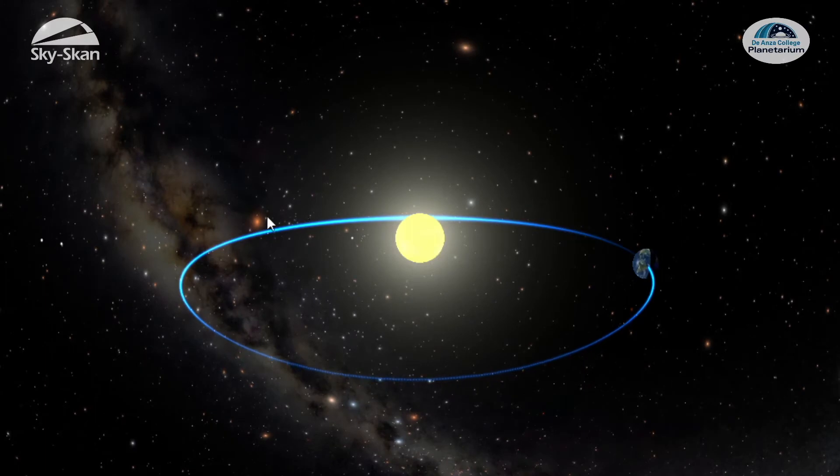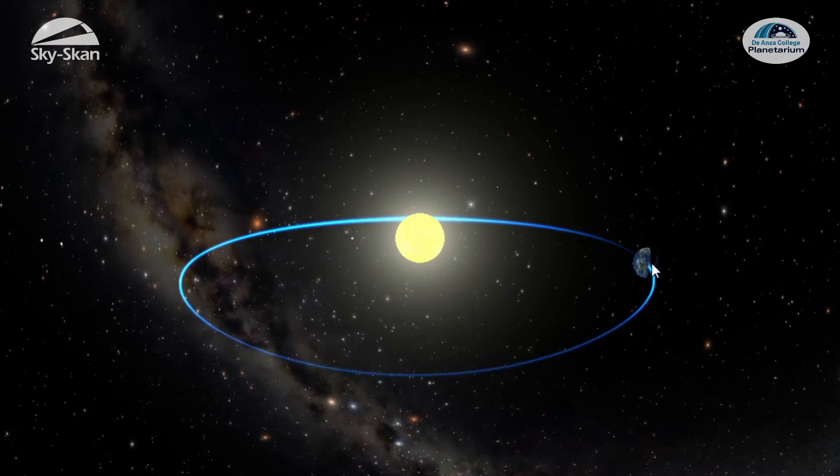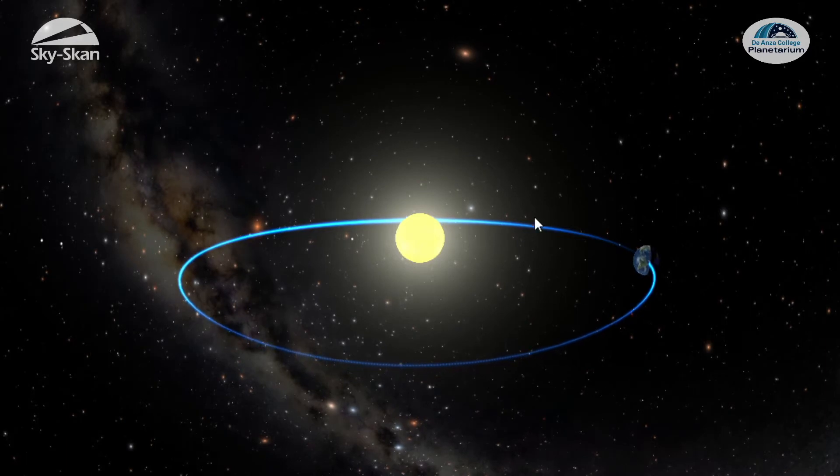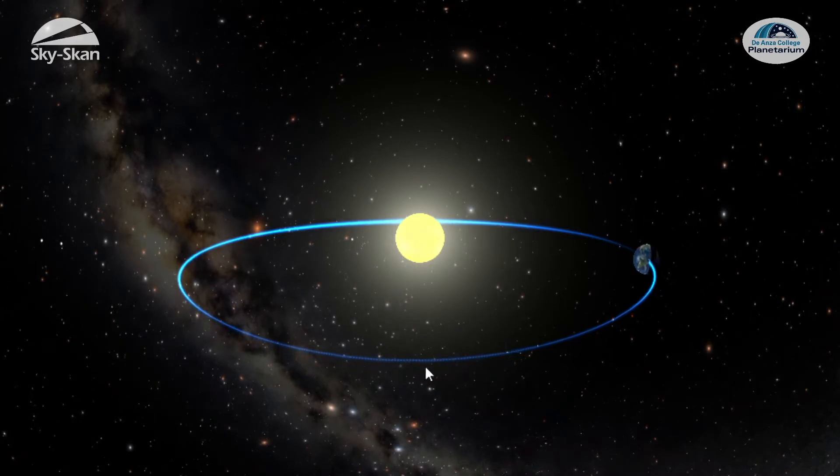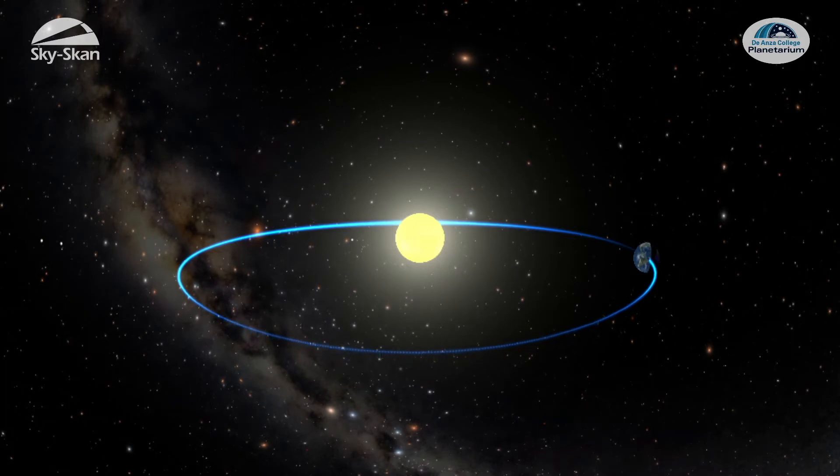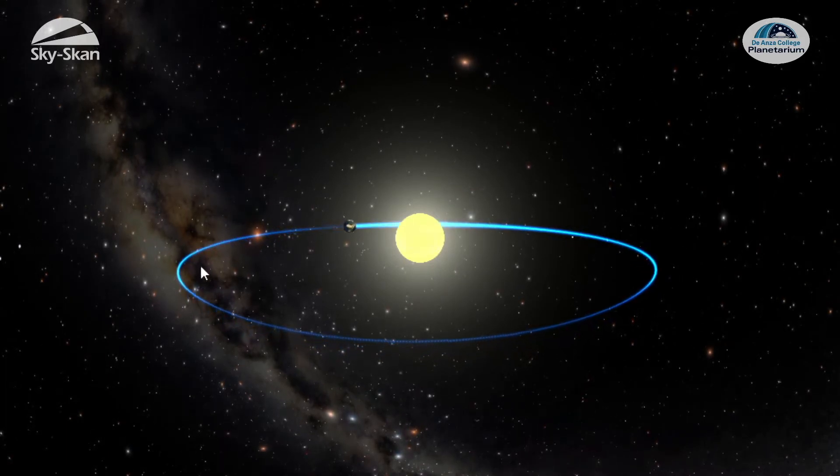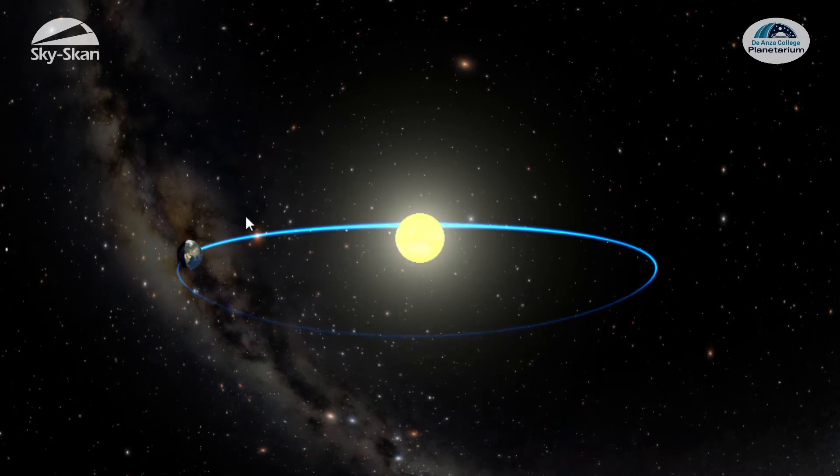Here we are looking at Earth's orbit from space. Now the size of Earth and the Sun are exaggerated here just so that we can see them. And from this perspective, the orbit definitely looks elliptical. We can go ahead and run time forward here and we can see Earth going around and around the Sun year after year after year.